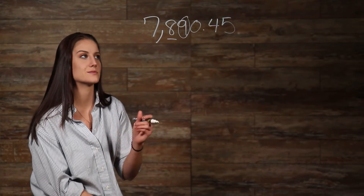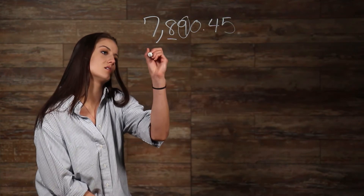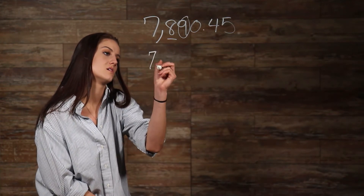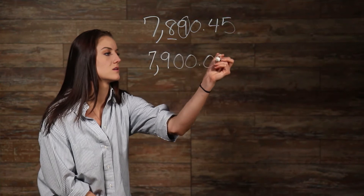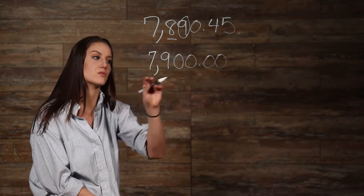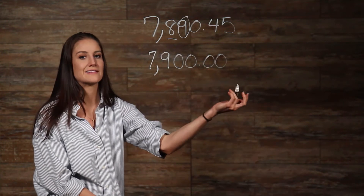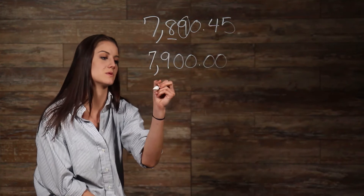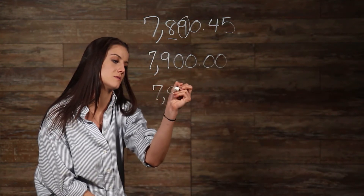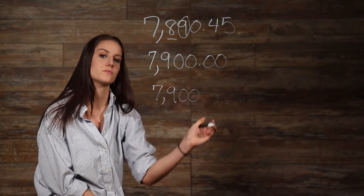9 is more than 5, so our round-off digit 8 needs to be rounded up. So we add 1 to the round-off digit and change everything to the right to zeros. Since everything to the right is already zeros, we don't really need this decimal place, so we can just rewrite this as 7,891.